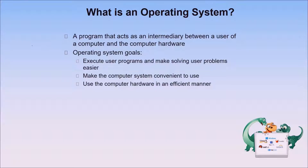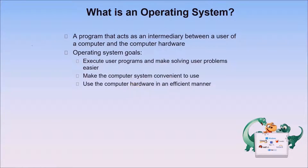The operating system is the translator between the device or the hardware and the user. These are the operating system goals: execute programs and make solving user problems easier; make the computer systems convenient to use; and use the computer hardware in an efficient manner. Imagine your computer without an operating system — how can you execute and play applications, navigate the computer system, and manage its resources? Basically, the operating system manages the resources of a computer.